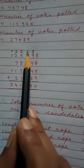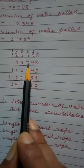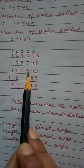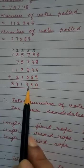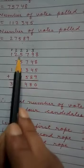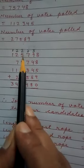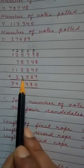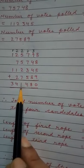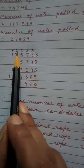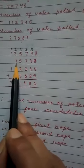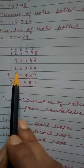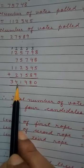So we write 2 here. So 2 plus 7, 9, 9 plus 7, 16, 16 plus 3, 19, 19 plus 5, 24. 4 you write here and 2 here. So 2 plus 5, 7, 7 plus 5, 12, 12 plus 2, 14, 14 plus 7, 21. 1 you write here and 2 here.